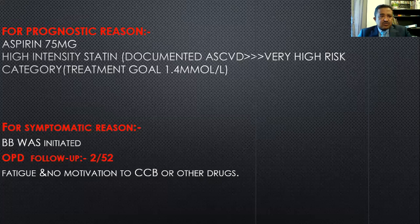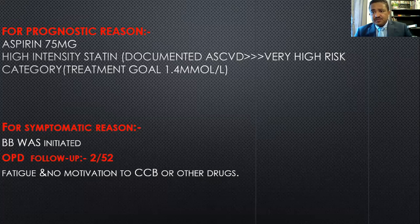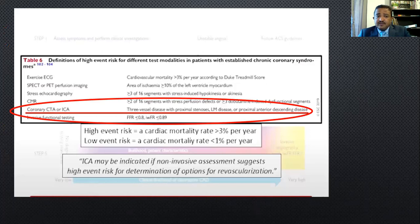Going back to the guideline — we now need to choose appropriate therapy based on symptoms and event risk. To recap: 52-year-old, atypical cardiac-sounding chest pain, pre-test probability 17%, CT coronary angiogram showing proximal LAD disease. This categorizes him as a high-risk patient. For prognostic reasons, according to the guideline, he was started on anti-anginal therapy — aspirin 75 mg and high-intensity statin. A beta blocker was also initiated for symptomatic reasons. He was reviewed in two weeks as advised by the guideline, but unfortunately he was unable to tolerate the medication, complaining of fatigue and having no motivation for further anti-anginal medication.